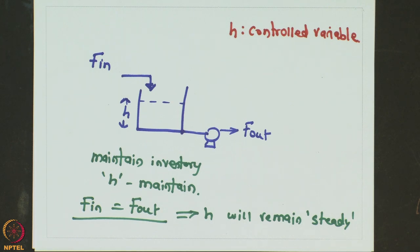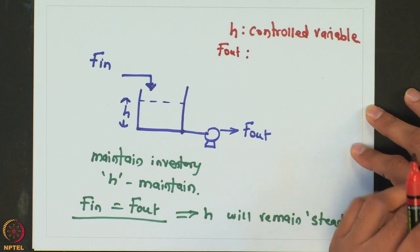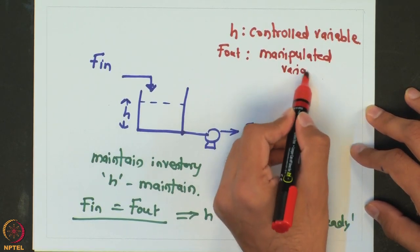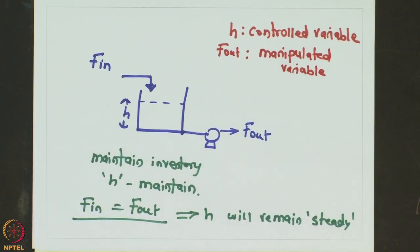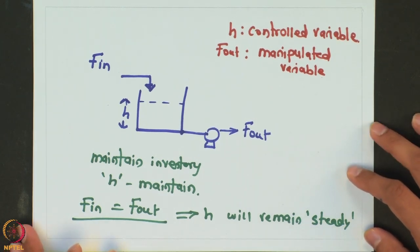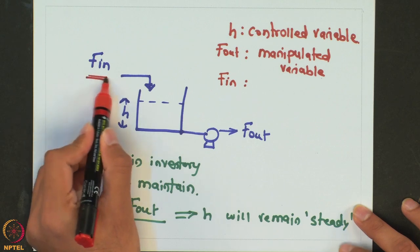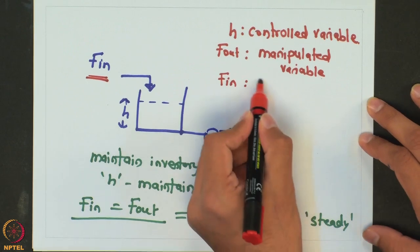The variable which is used to control this particular controlled variable is known as the manipulated variable. As shown earlier, the outlet flow rate was used to ensure that the level remains at its desired value, so it is known as the manipulated variable. A manipulated variable must affect the controlled variable, otherwise it cannot manipulate it. Other than that, there are also variables which will affect the controlled variable but over which we have no control. For this particular example, the inlet flow rate was a variable that affects the controlled variable but we cannot change its value. Such variables are known as disturbance variables.